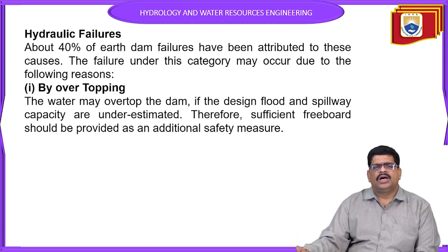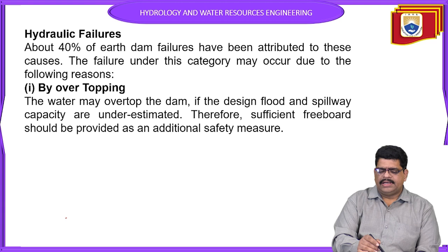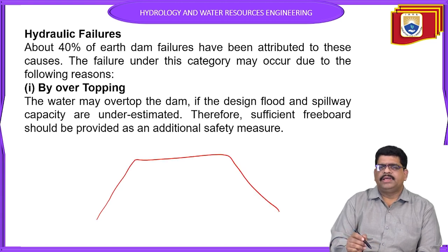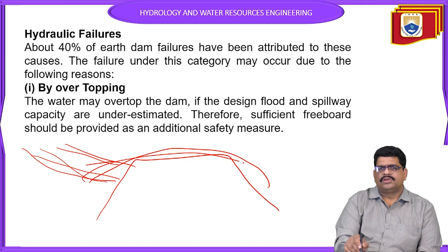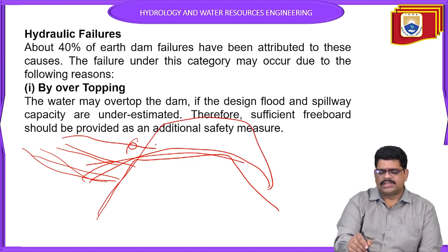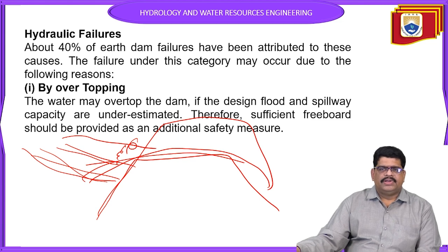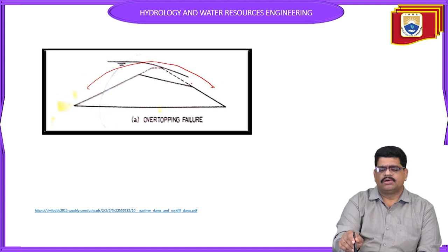For hydraulic failures: most probably 40 percent of earthen dams fail due to hydraulic failures. The four subtypes are: overtopping, erosion due to upstream surface, erosion due to downstream face, and erosion due to downstream flow. By overtopping: the dam's inflow capacity may be underestimated — water comes in and if the spillway cannot handle it, the water overtops and damages the upstream side.